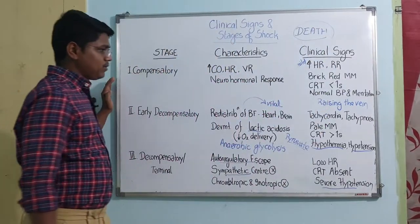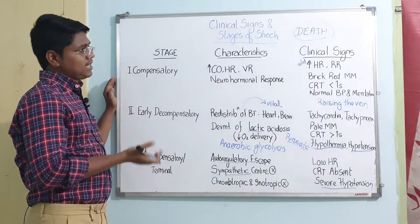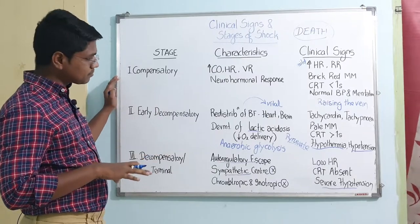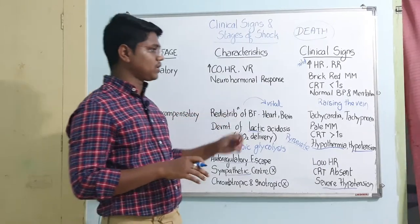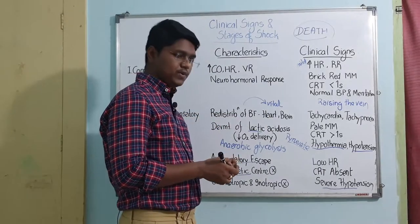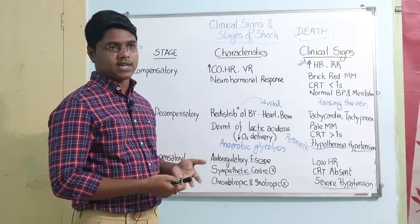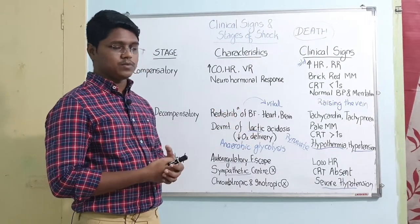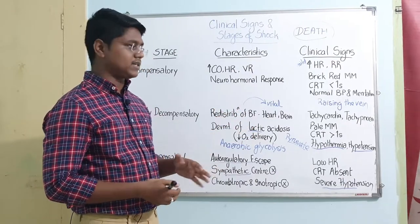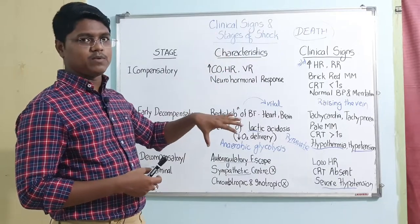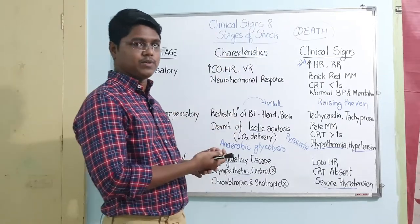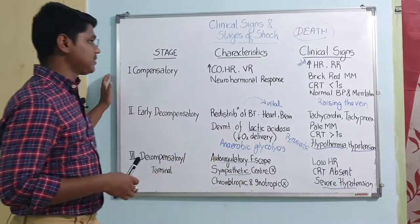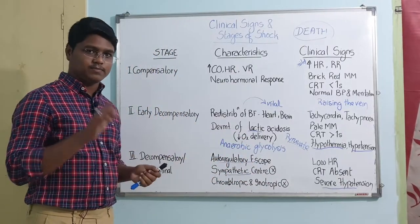This is all about shock — its classification, stages, signs, and pathophysiology. In the next class we will go for fluid therapy: types of fluids like crystalloids and colloids, their dose rates, combination therapy, compositions, commercially available fluids, and when to use balanced electrolyte solutions. Thank you.